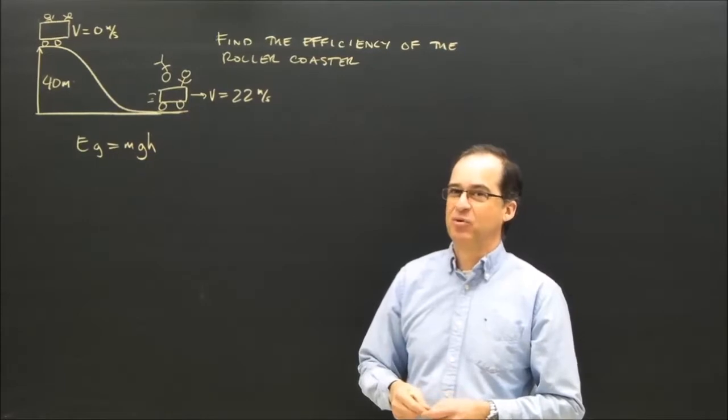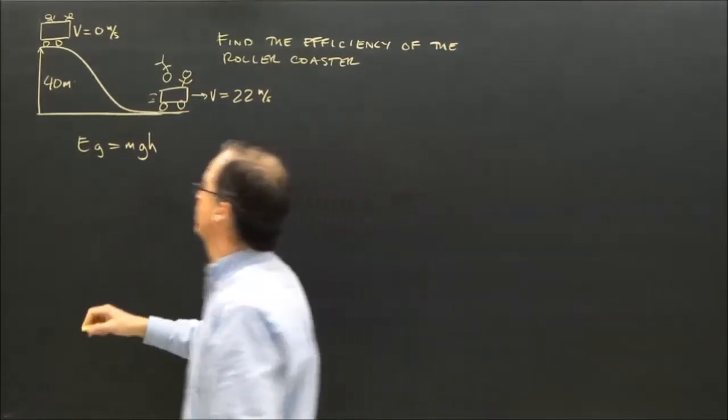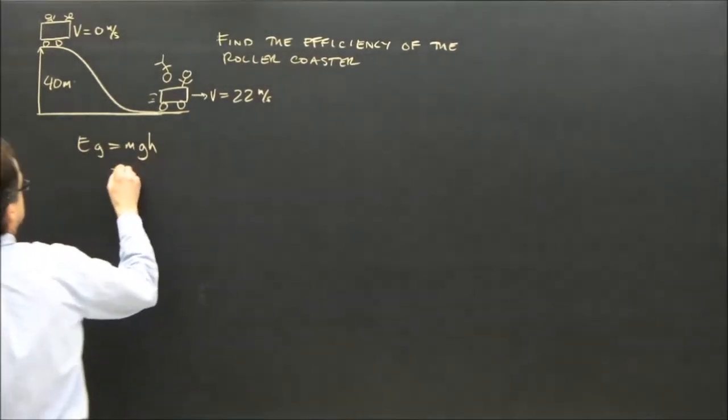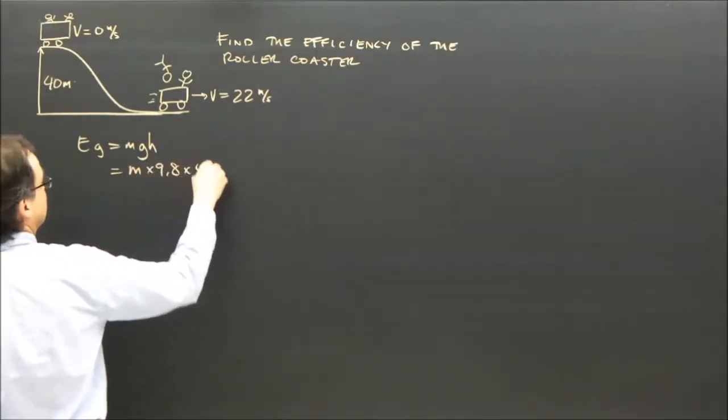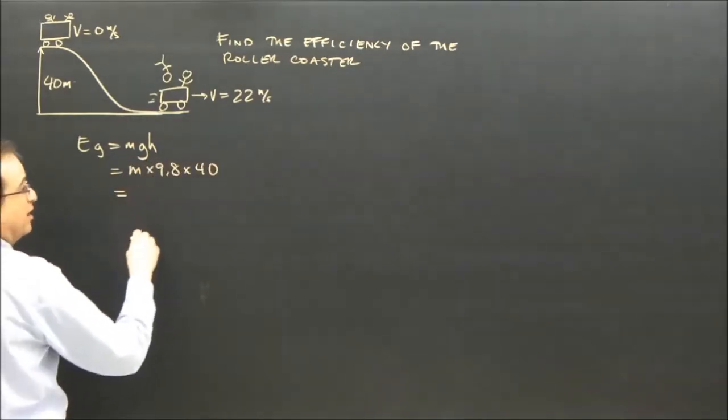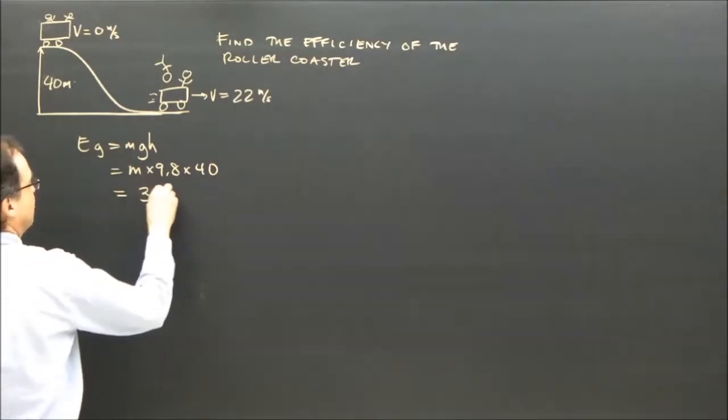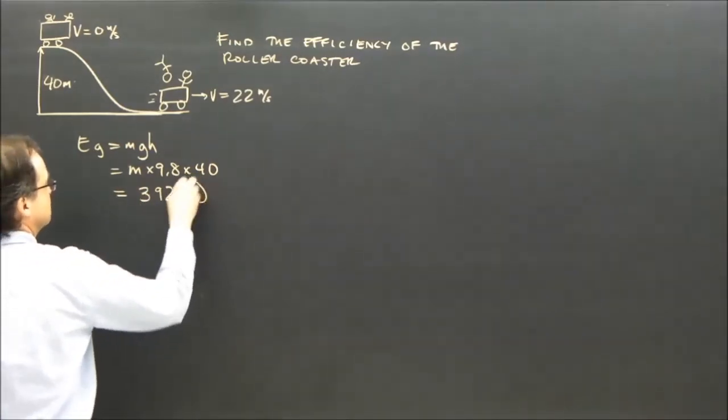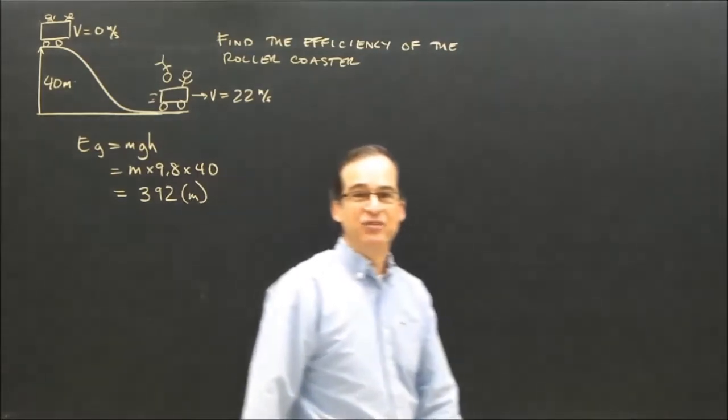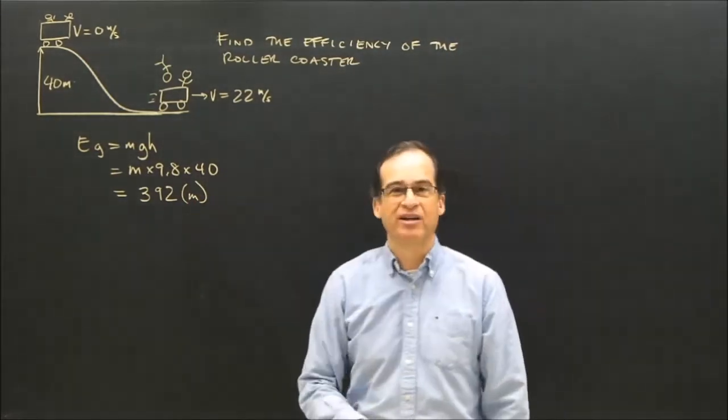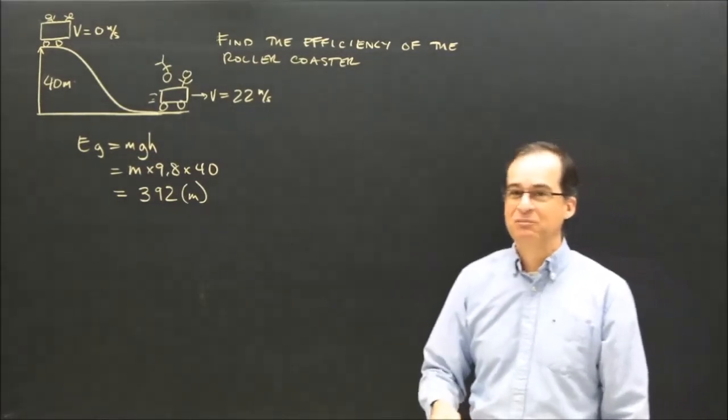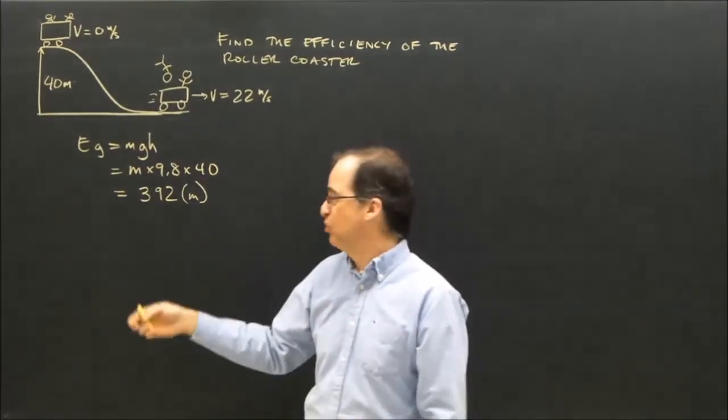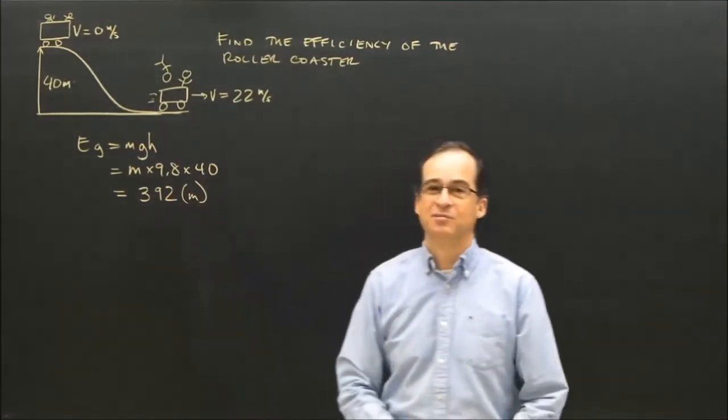It'll cancel out at some point usually. So the gravitational energy at the top is mgh, which is m times 9.8 times 40 meters. I end up with 392 times the mass. I put the mass in round brackets just so I don't confuse myself. It's 392 times the mass.